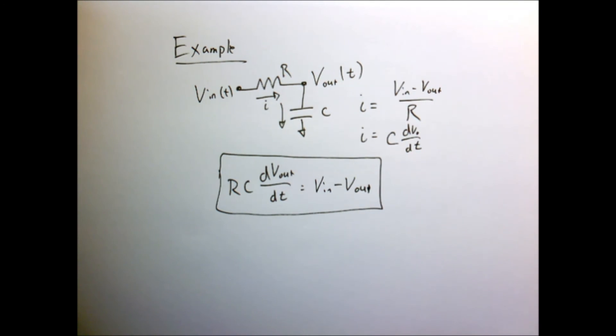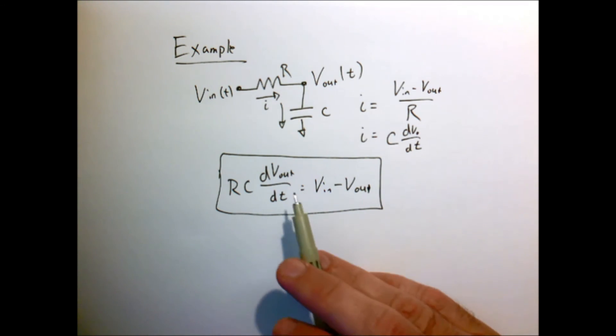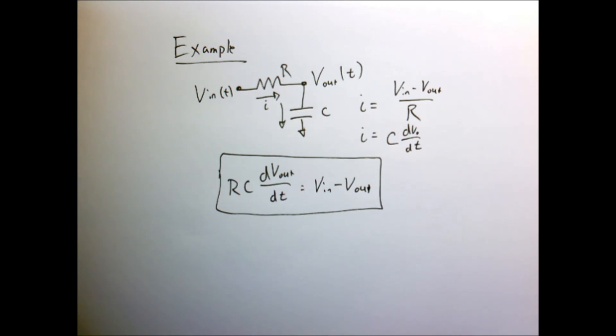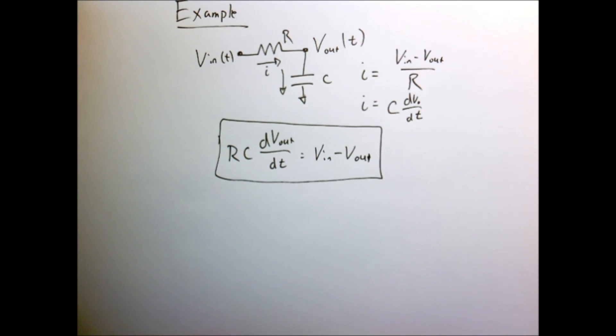We specifically assumed that V in was given by some amplitude times sine of omega T and V out was given by some new amplitude times sine of omega T plus some phase. Now we're going to assume complex numbers.